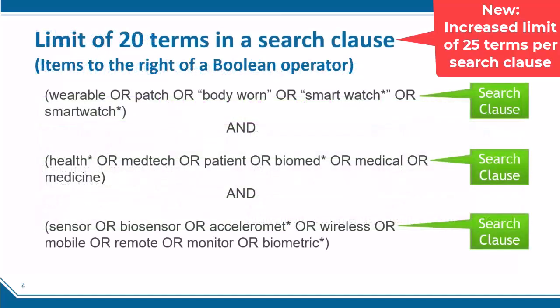The maximum number of search terms in IEEE Xplore is 20 per search clause, with no limit to the number of search clauses. In this search example, there are three search clauses, and each is well within the 20 search term limit.